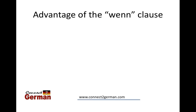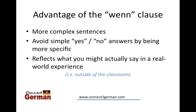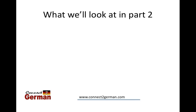The advantages of a WENN clause, as I mentioned, is that it makes your answer a little more complex. It allows for a more complex answer, so you don't have to just say yes or no. You can actually provide a condition, and this is pretty realistic — more in line with what you would say in a real-world experience, not just a textbook answer.